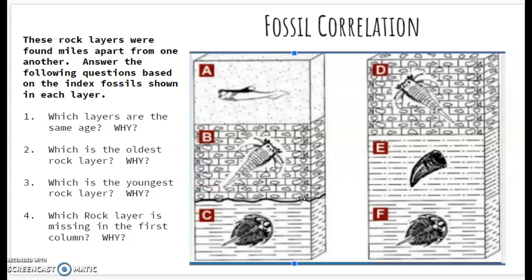So in this case, where column one formed, there was erosion and a rock layer disappeared. We don't know where it went. It's just gone. But we can find that rock layer in column two.